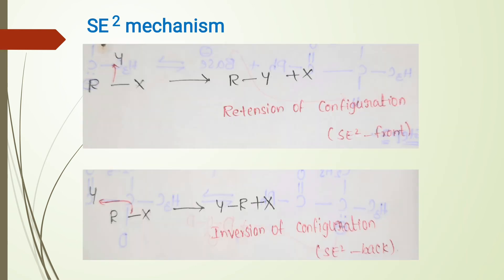The SE2 Mechanism stands for Bimolecular Electrophilic Substitution Mechanism. Hence, it is a bimolecular reaction — that means the rate-determining step depends on the concentration of both the substrate and the electrophilic reagent. So, the rate of reaction depends on the concentration of both the substrate and the reagent. It is similar to the SN2 Mechanism.